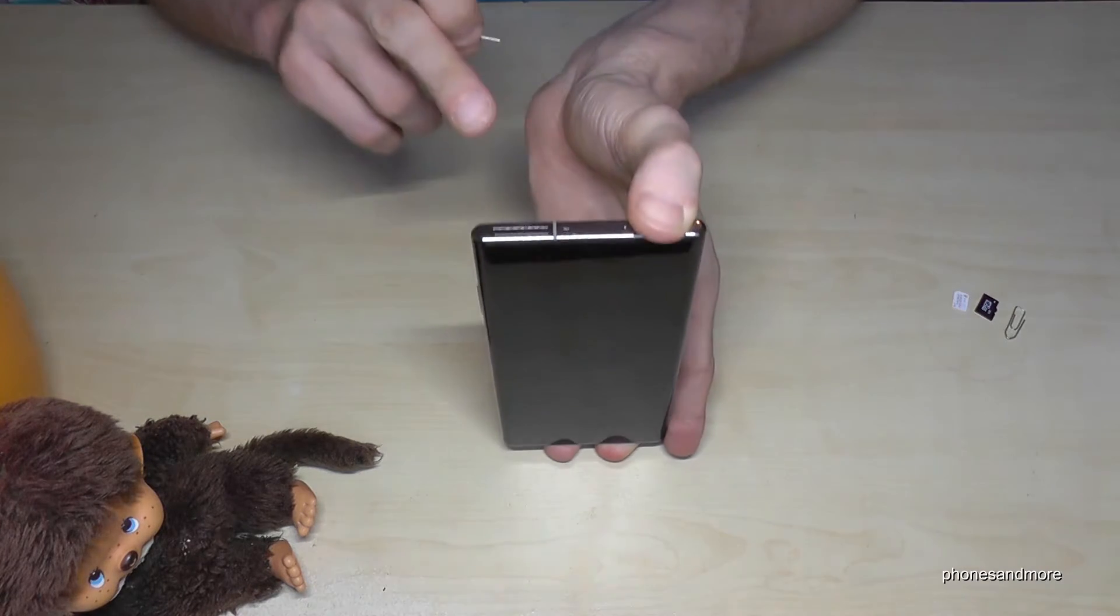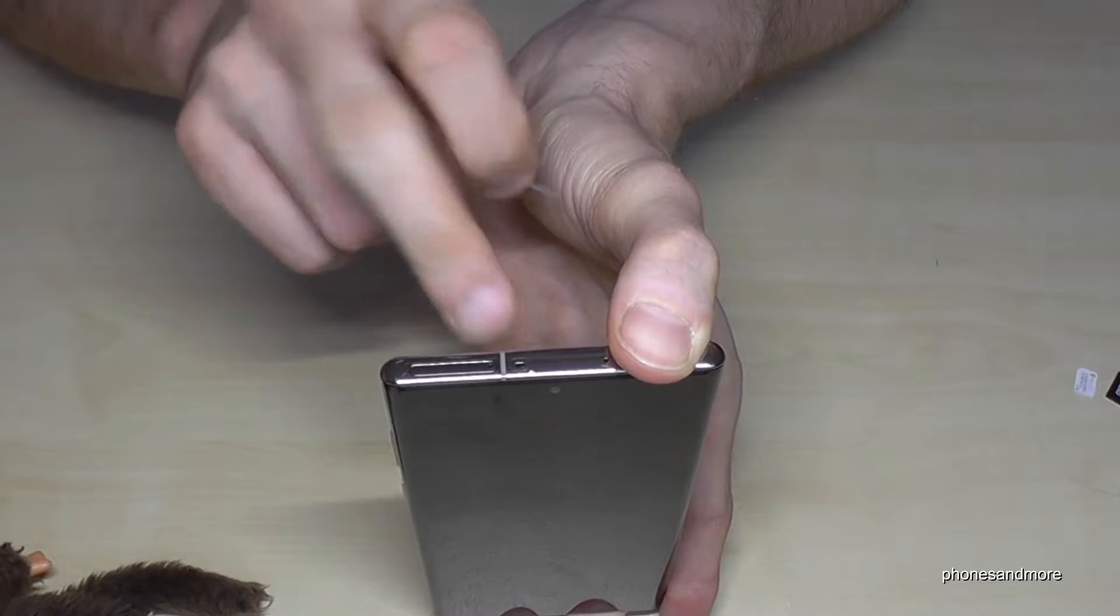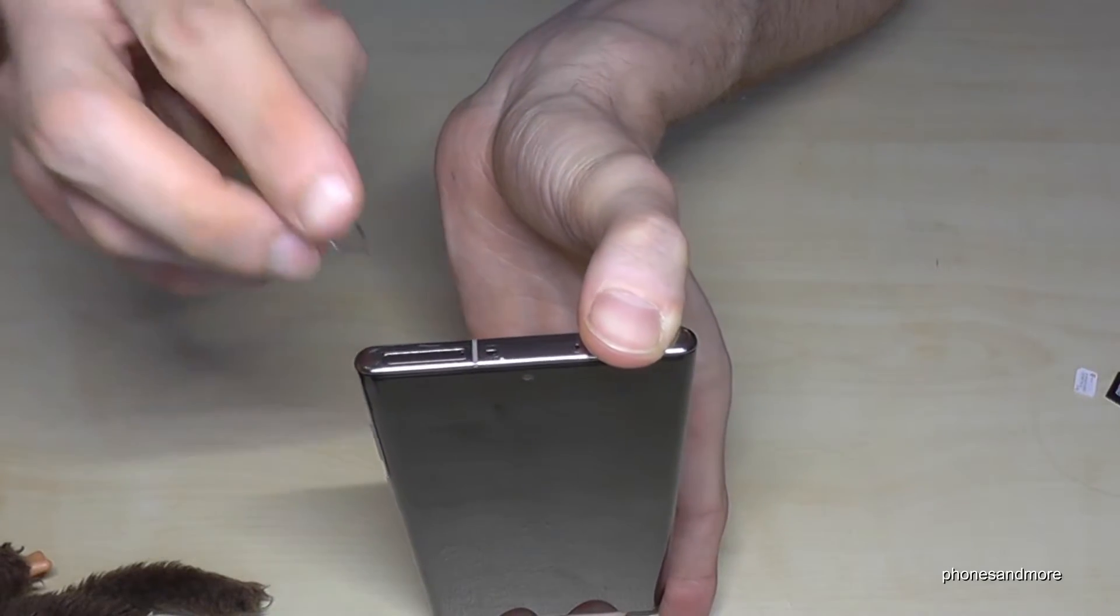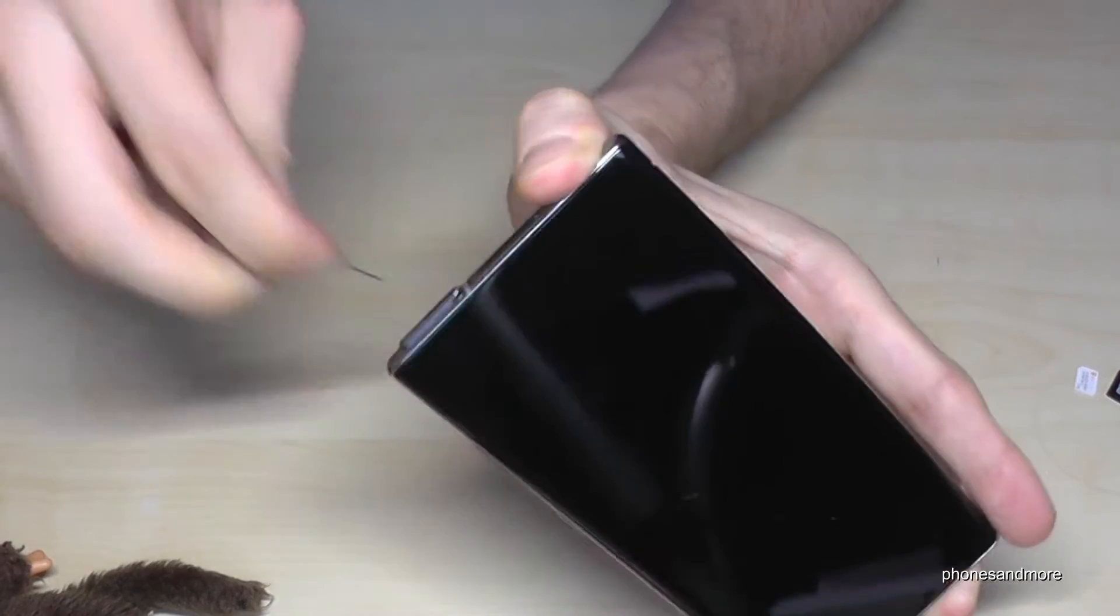Okay, if you have the phone like this, you'll find the SIM tray on the top with a small hole. With the edge of the pin or paper clip, you enter that hole, press a bit, and the SIM tray will come out.